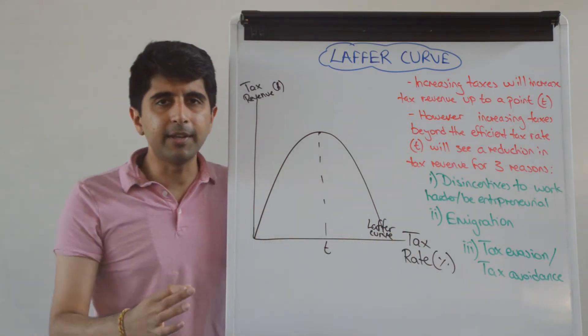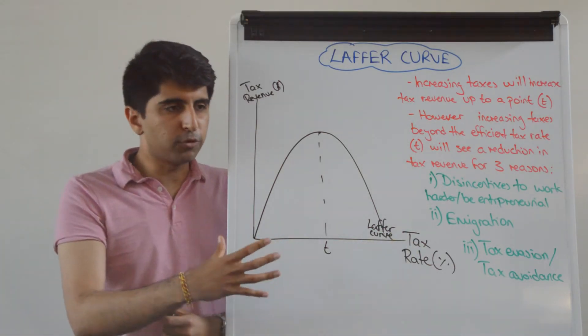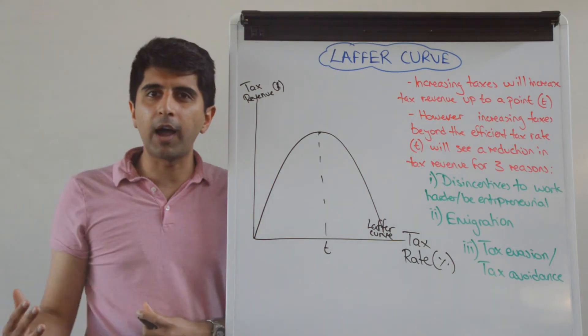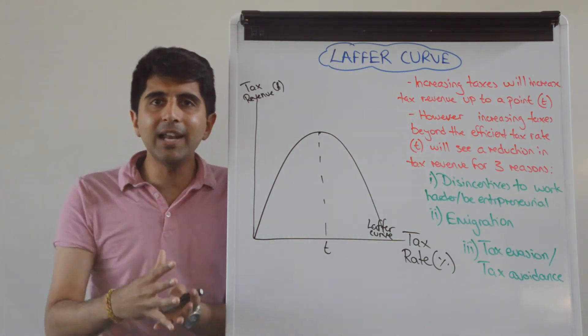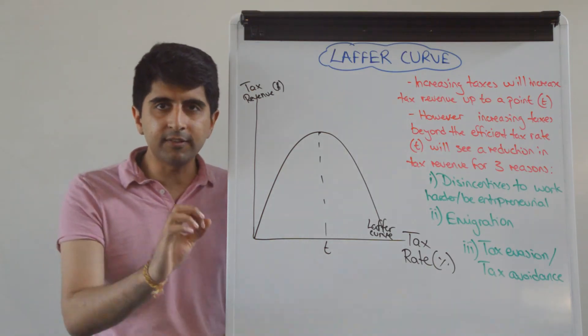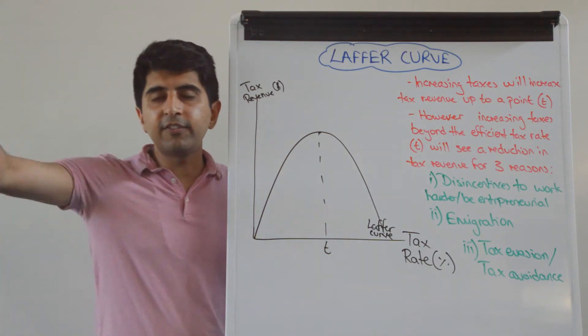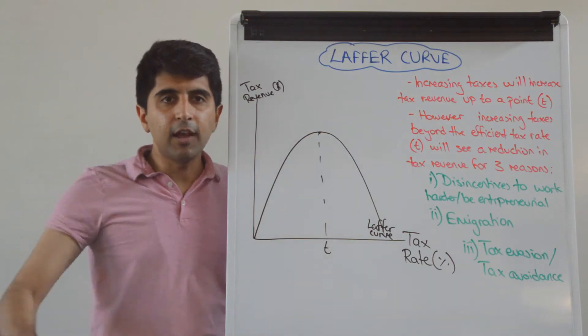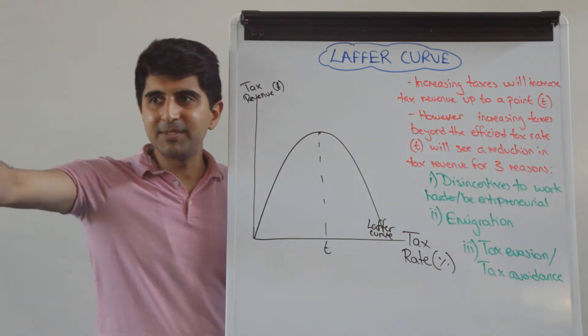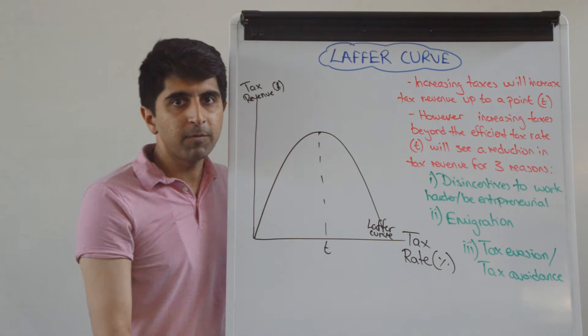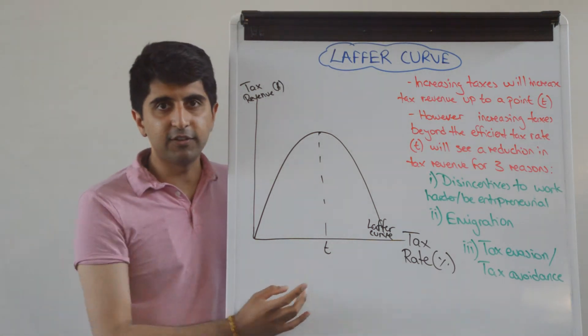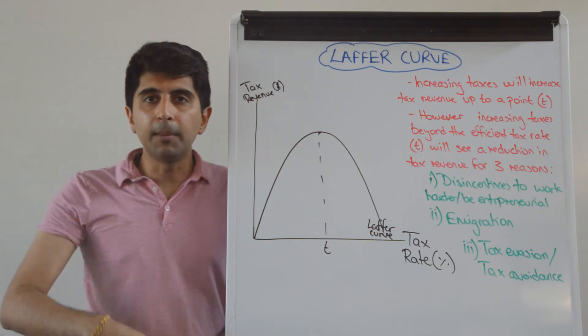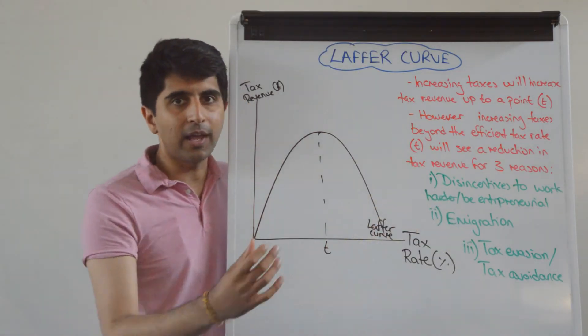Another strong argument is the emigration that comes from setting tax rates so, so high. If income taxes are really high, what's the incentive for the highly skilled, for the best entrepreneurs to stay in your country? Well, if tax rates are lower in other economies, all you're going to do is incentivize them to leave your country to emigrate. So Laffer argues the higher your tax rate is beyond the efficient tax level, the more you incentivize highly skilled emigration.